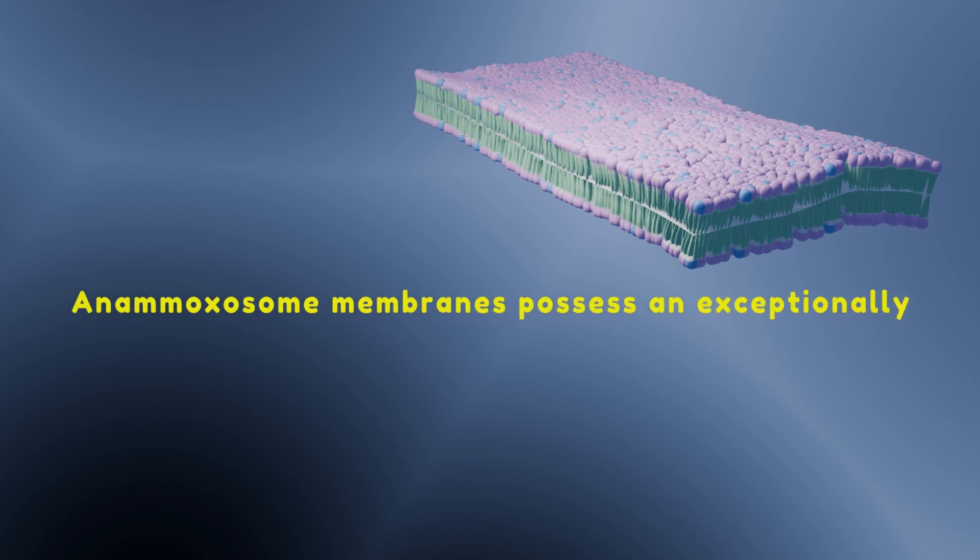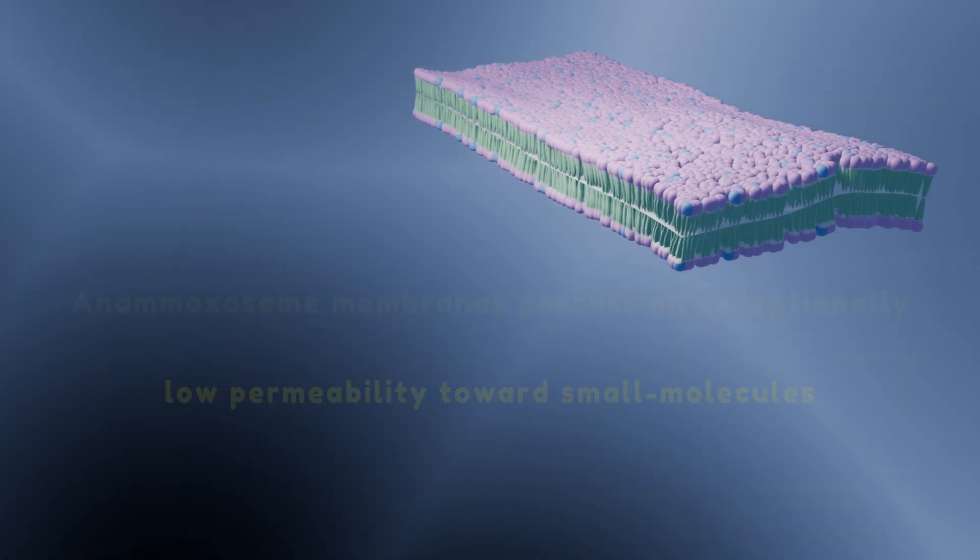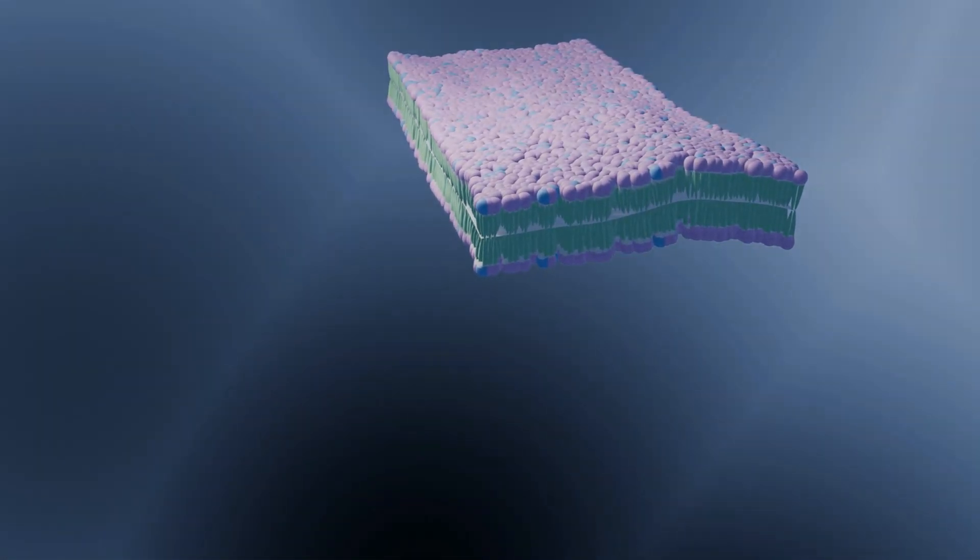Anammoxosome membranes possess an exceptionally low permeability towards small molecules. So the existence of ladderane lipids restricts the diffusion of hydrazine from the cell. Furthermore, molecular modeling suggests that membranes composed of ladderane lipids are unusually dense compared with conventional lipid membranes.